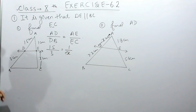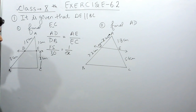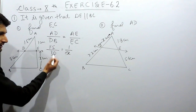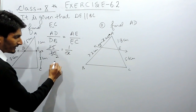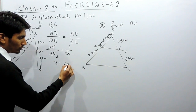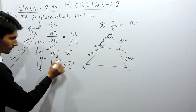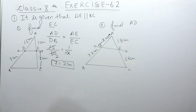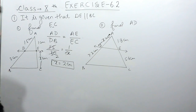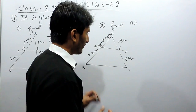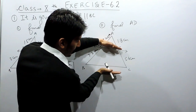Substituting the values — replacing 1.5 as 15 over 10 and simplifying — we get 30 in the denominator. Cancelling and cross-multiplying gives the value of X equals 2 centimeters. So in the first case, EC equals 2 centimeters.